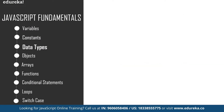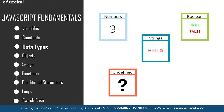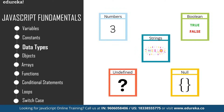Next up are data types. You can assign different types of values to a variable, such as a number or a string. In JavaScript you have two categories of data types: primitive and reference. For primitive you have number, string, boolean, null, and undefined. For reference you have objects, arrays, and functions.